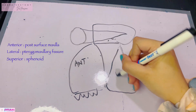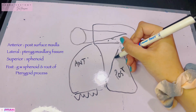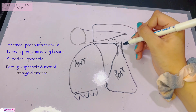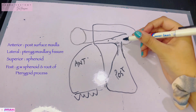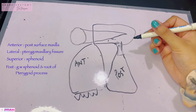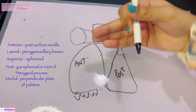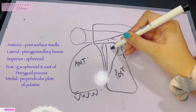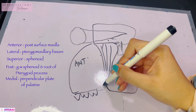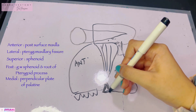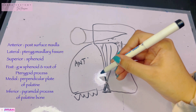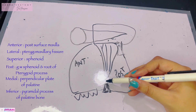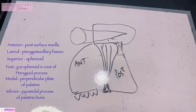Above is the sphenoid bone. The posterior boundary is formed by the root of the pterygoid process, and the greater wing of the sphenoid also adjoins this part. So these two form the posterior boundary: the greater wing of the sphenoid and the root of the pterygoid process. Medially is the perpendicular plate of the palatine bone, and the pyramidal process closes the fossa inferiorly by joining the maxilla and the pterygoid process.